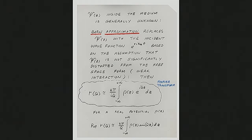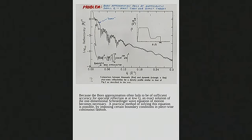For reflectometry, the Born approximation fails at very low Q. Here's a model scattering density profile normal to the surface — the exact solution looks like this, but the Born approximation Fourier transform relationship looks different. At higher wave vector transfers, it's a perfect match. But down at low Q, on this log plot, it differs by more than an order of magnitude in places — it totally fails. If you try to analyze neutron or X-ray reflectometry data with the Born approximation, you are guaranteed to get the wrong answer unless the material is extremely thin or has a very weak scattering potential.